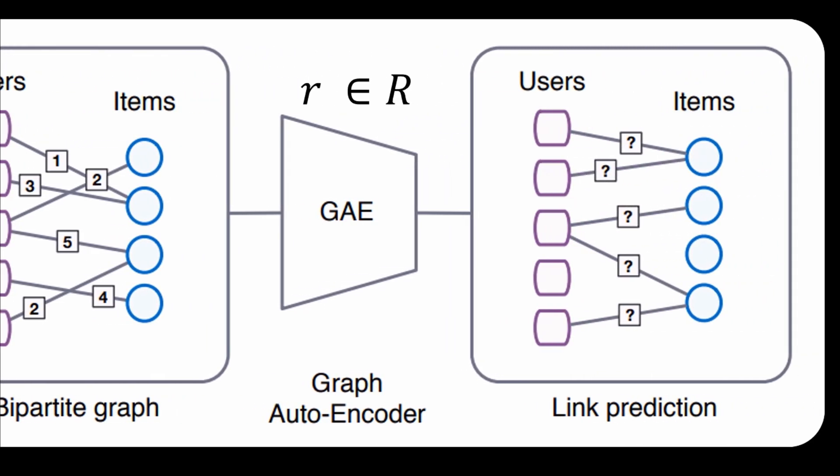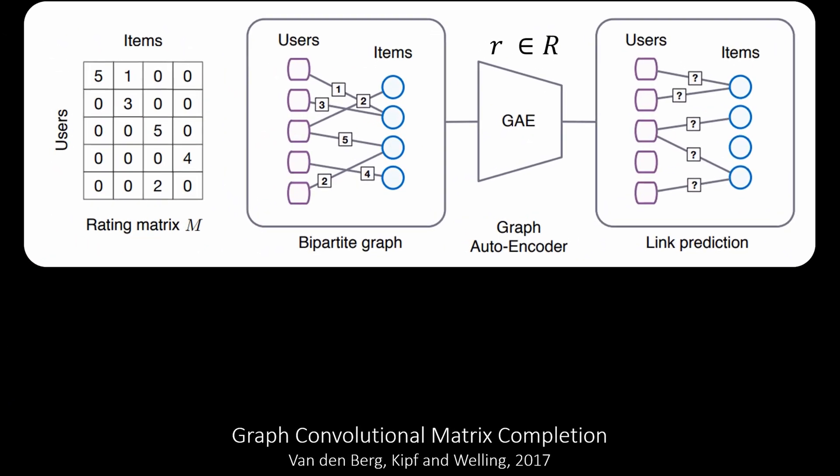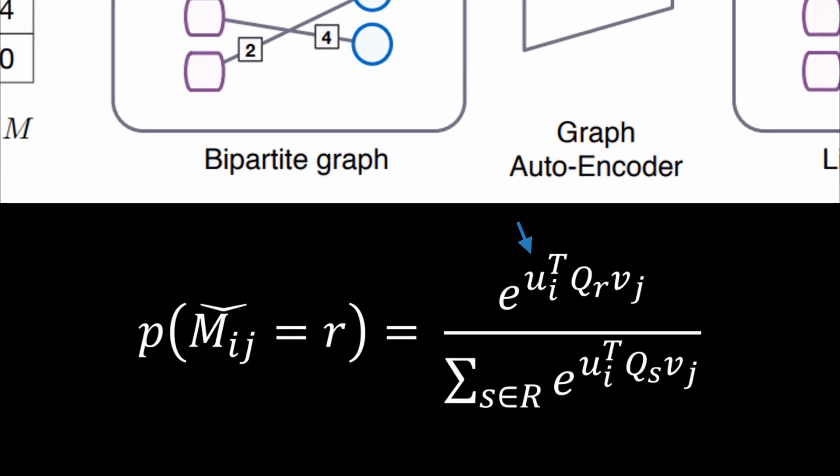Then link prediction is performed based on the final item and user embeddings. As a formula, this can be expressed like this, which means the users are multiplied with the items and a learnable transformation Q is applied. Finally, Softmax is used to predict probabilities for the different edge types R.